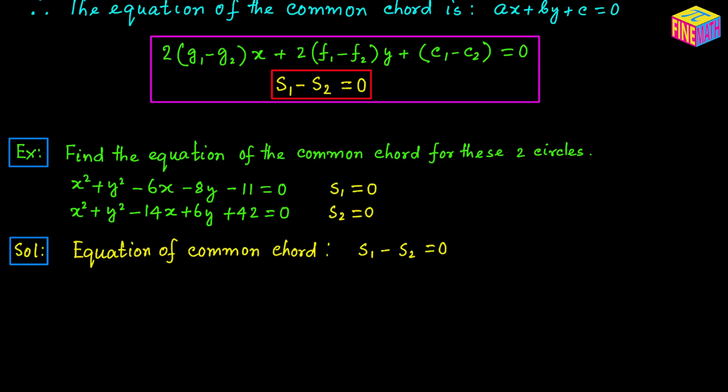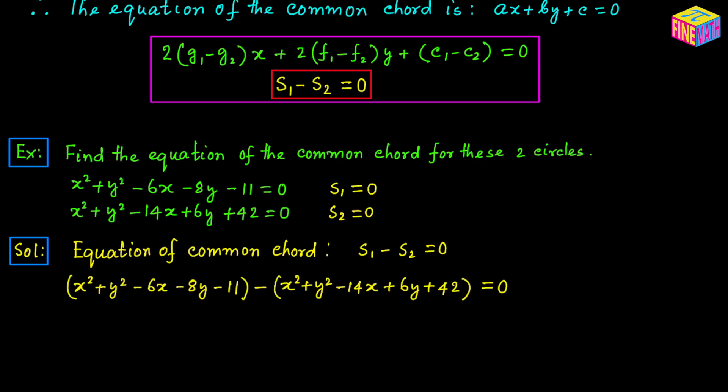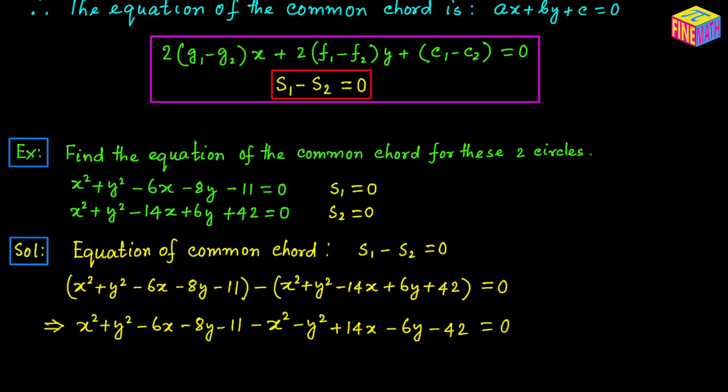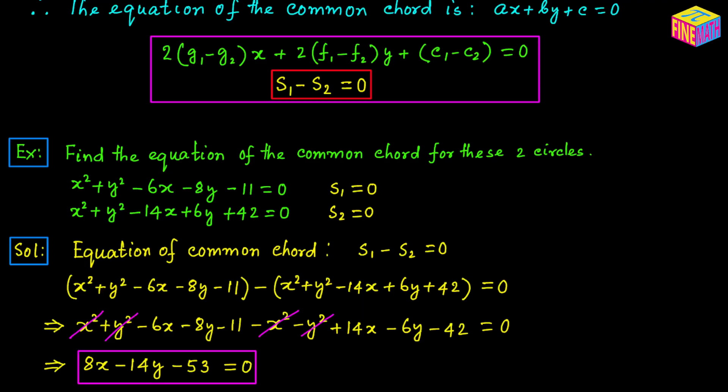So if we subtract the second equation from the first and remove the parentheses, the x squared terms cancel and the y squared terms cancel. We are left with 8x minus 14y minus 53 equals 0, and that is the equation of the common chord for these two circles. All you have to do is express both circle equations in the form x squared plus y squared plus etc., subtract them, and the squared terms disappear leaving a plain linear equation — the equation of the common chord.